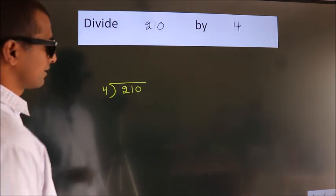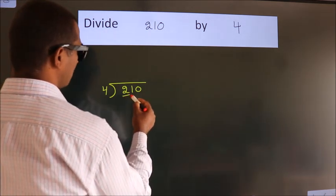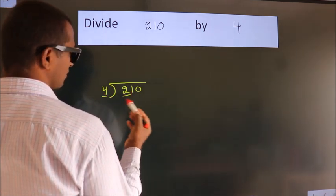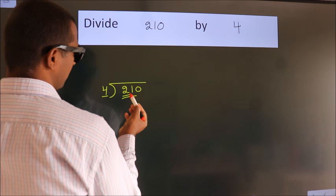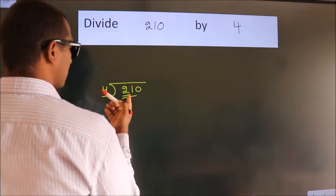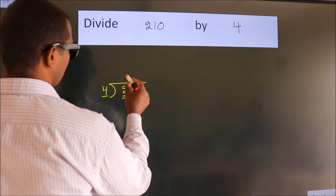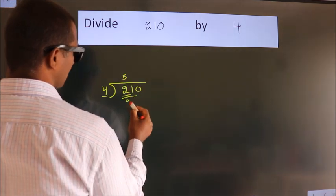Next, here we have 2, here 4. 2 is smaller than 4, so we should take 2 numbers: 21. A number close to 21 in the 4 table is 4 fives 20.